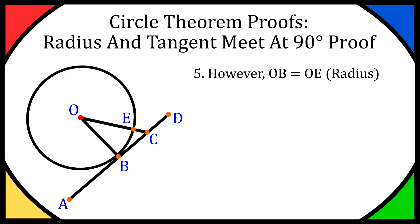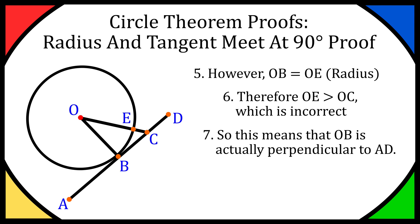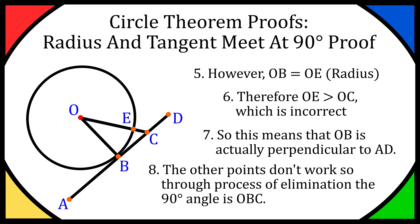However, OB equals OE because both are radii — they go from the centre to the circumference. Therefore OE would be greater than OC. But this is incorrect, because OE is the radius and OC goes beyond the radius. So this means it is actually OB which is perpendicular to AD and not OC — you go through this process of elimination to prove that the other points don't work.